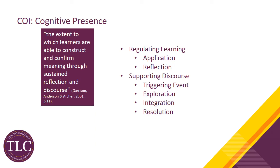The definition of cognitive presence, from Garrison, Anderson, and Archer 2001, is the extent to which learners are able to construct and confirm meaning through sustained reflection and discourse. The primary indicators of cognitive presence are applying learning and reflecting on learning, as well as the four stages of the practical inquiry model which support discourse. The triggering event is usually the discussion prompt in the assignment. Students then explore and discuss, connect ideas and tentative conclusions or solutions, and then resolve the problem and apply new knowledge and ideas.